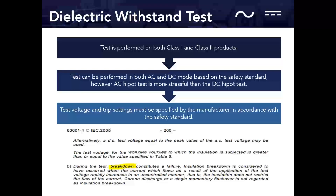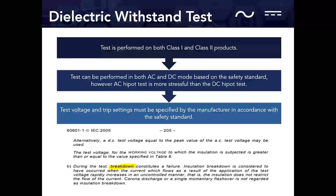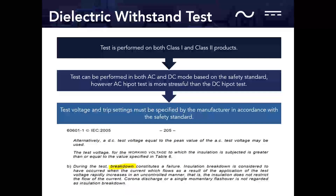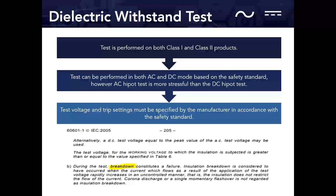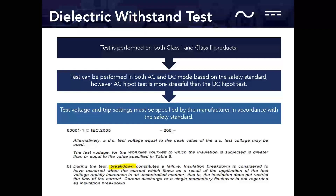The test can be performed in AC or DC mode based on the safety standard. However, the AC test is more stressful than the DC hypot test. This is because AC reaches peak voltages — for example, a 1000V AC hypot test has an effective value of 1000V but reaches a peak of approximately 1414V (1000 × 1.414), so for a moment during each cycle the insulation sees 1414 volts positive and negative. That's why it's a slightly more stressful test than DC.